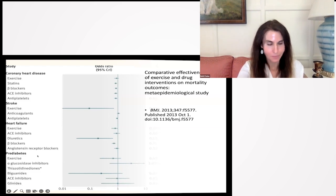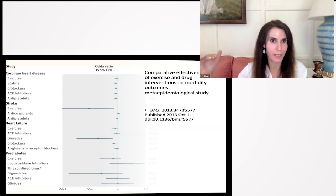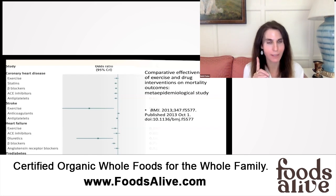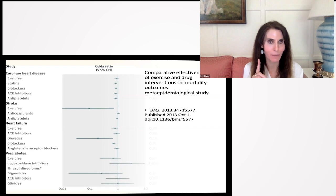Then prediabetes. Blood sugars are high, hemoglobin A1C is high, but not high enough to be diagnosed for diabetes yet. In this case, we compare exercise to the many medications that are used for diabetes, and it does fairly well. Again, there are medications that do better with exercise.